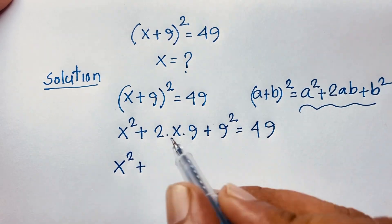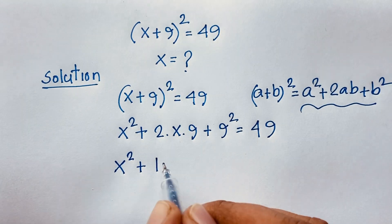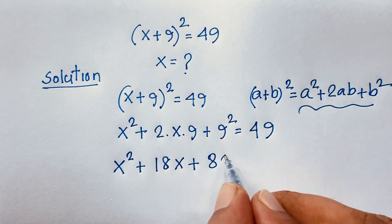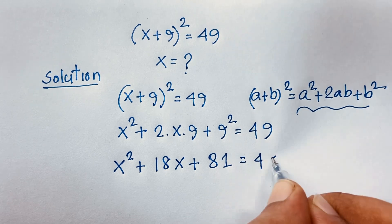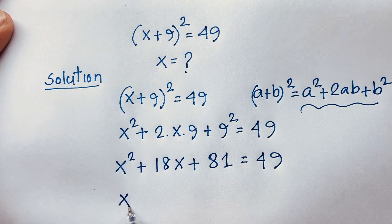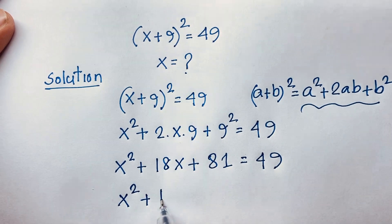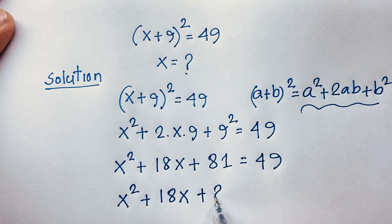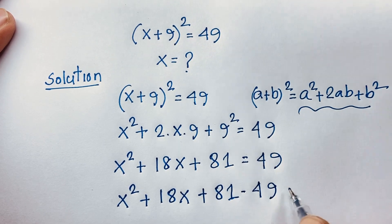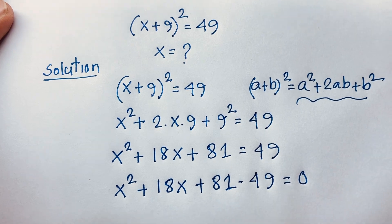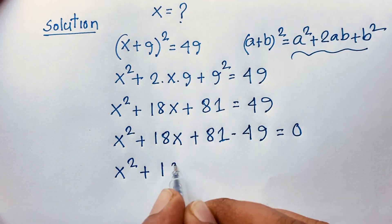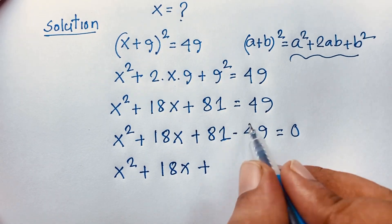Now you can see here: x squared plus 2 times 9 — it will be 18x — and 9 to the power 2 it will be 81, is equal to 49. Solving step by step: it will be x squared plus 18x plus 81, and if I move 49 to this side it will be negative 49, is equal to zero.